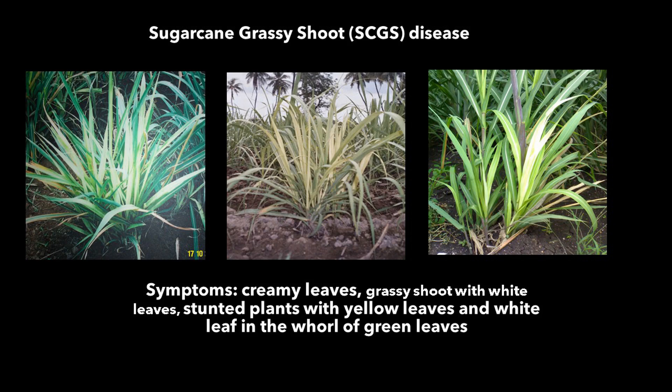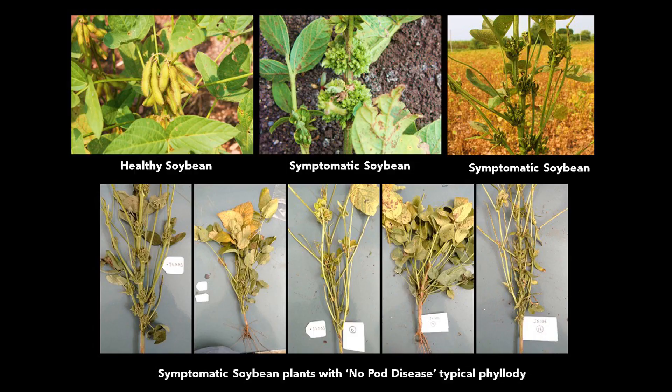With sugarcane, there is no cane development at all — nothing to harvest. Sesame is a typical example of the phyllody symptom; if infection happens before flower development it completely turns into a bunch of leafy structures — no flowers, no pods, no seeds. The same thing happens with soybean. In fact the soybean disease name is very interesting: it is called soybean no-pod disease. The soybean plant looks very healthy but you have no flowers, no pods — and that is because of phytoplasma.